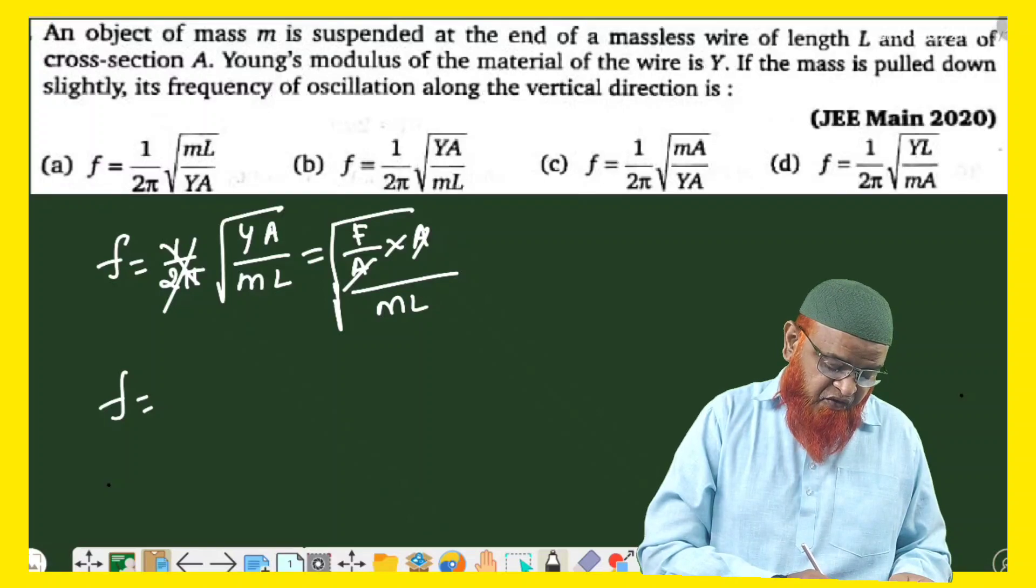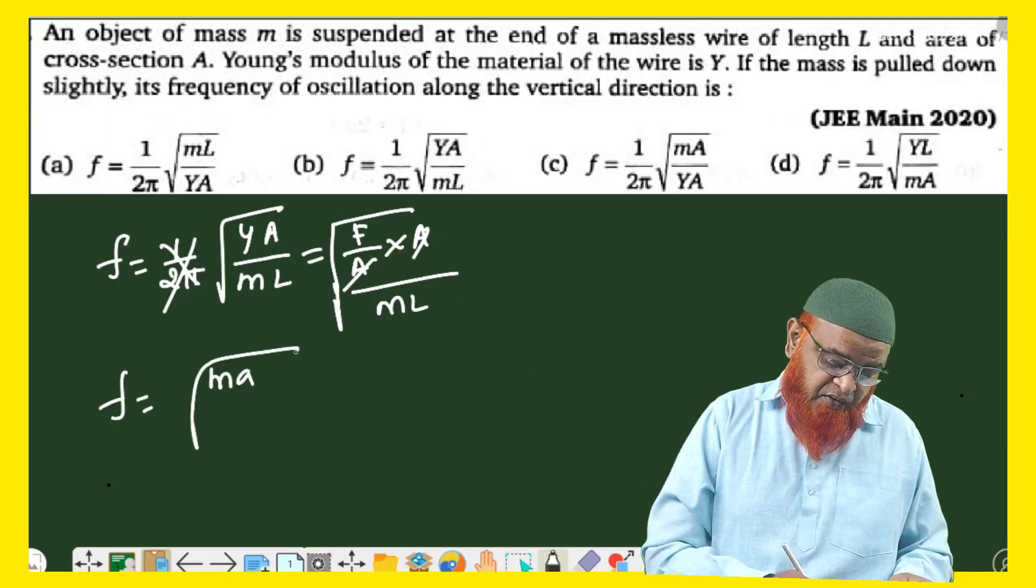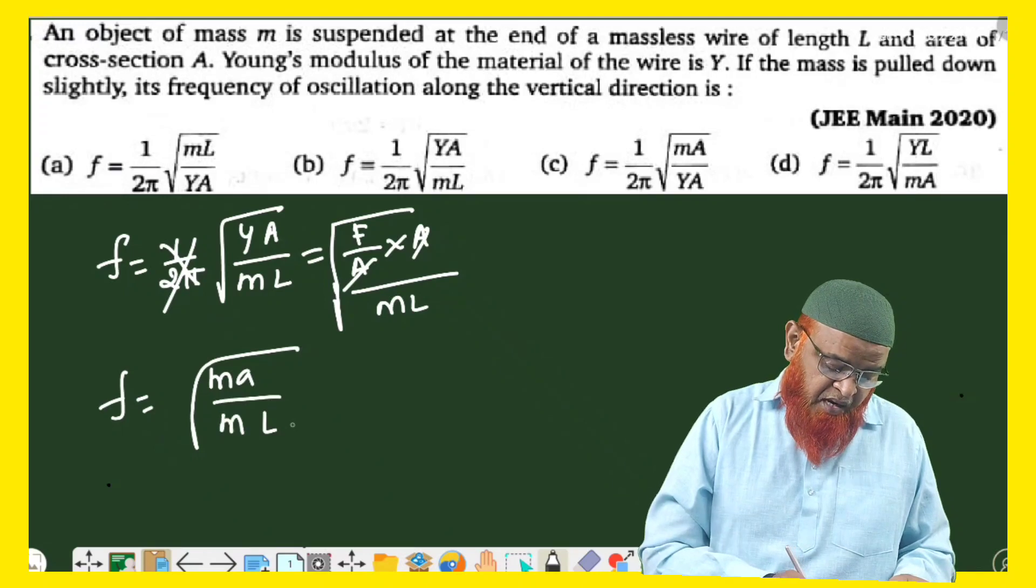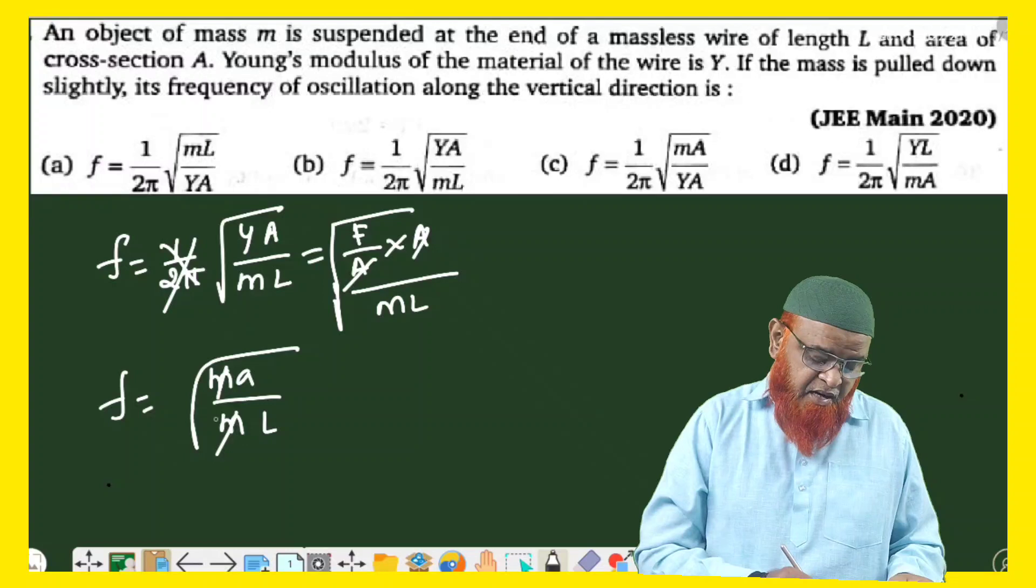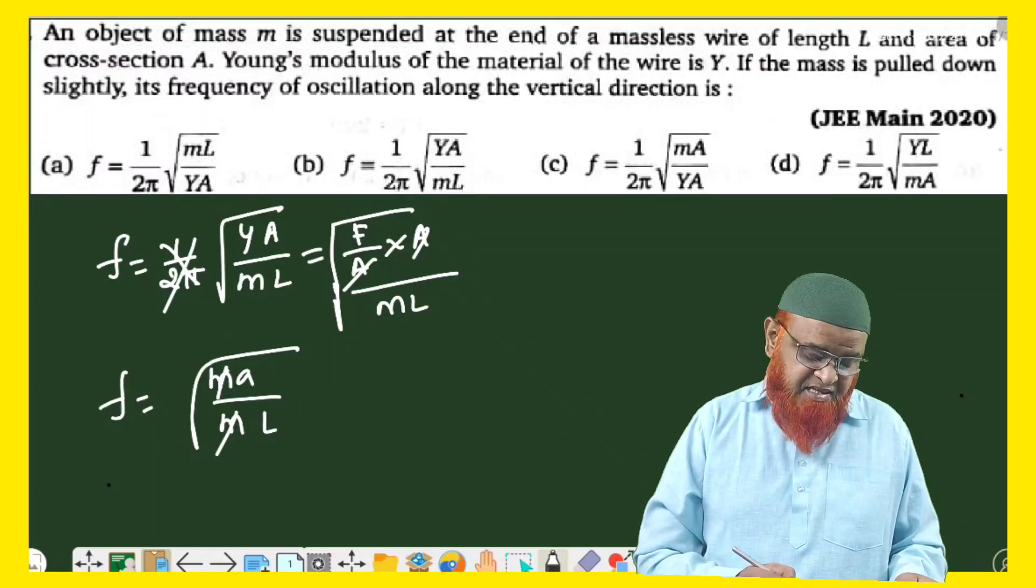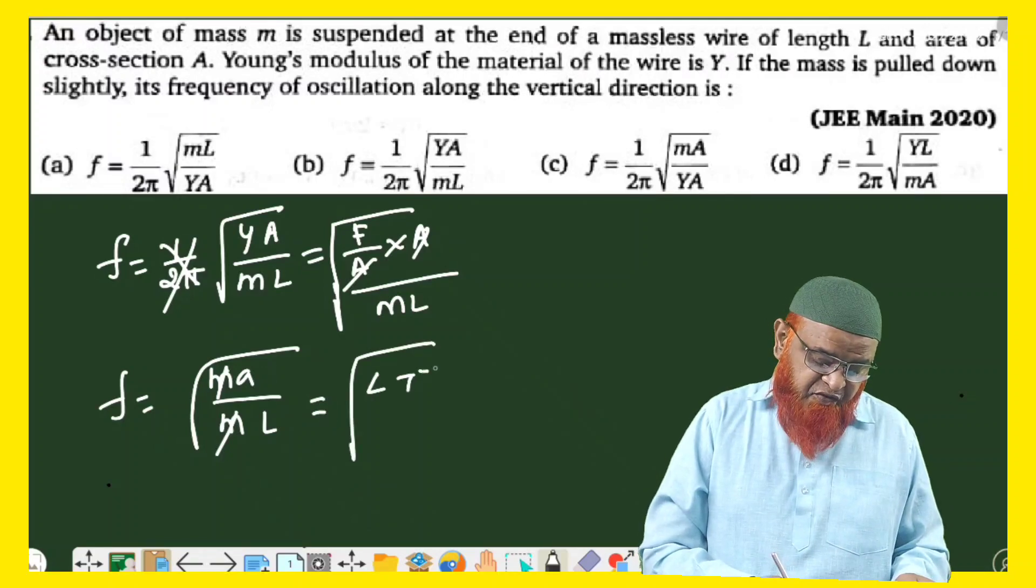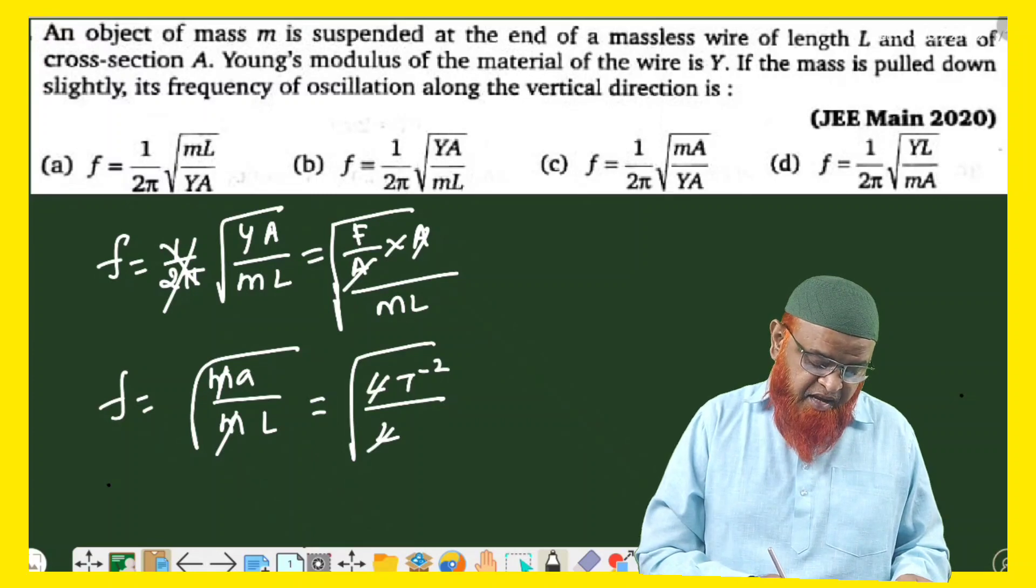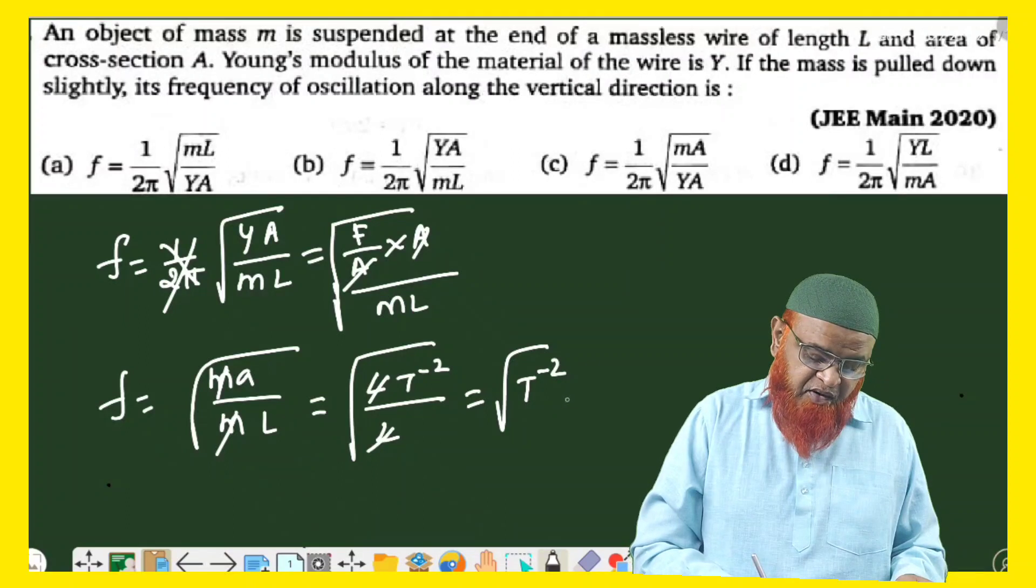Let us see - if you write the dimensional formula for frequency, force is nothing but mass into acceleration divided by mass into length. Then mass mass gets cancelled here. What is left? Acceleration is left, which is having a dimensional formula LT^-2 divided by L. L gets cancelled and what is left is only T^-2.